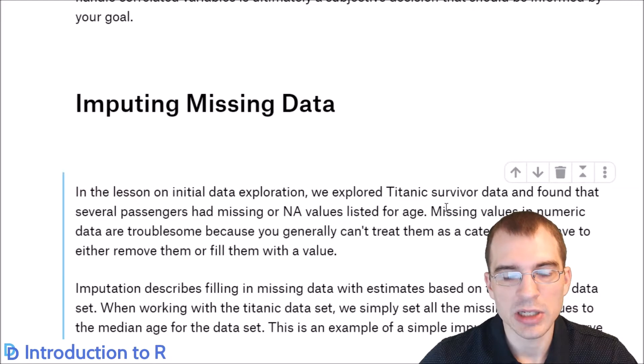Imputing means filling it in based on some informed approach about what the value might be. One of those is using k-nearest-neighbors modeling, which essentially looks for records that are similar to that one and uses the values from those to fill in the value that you don't know. We'll just go into how to do that in R.